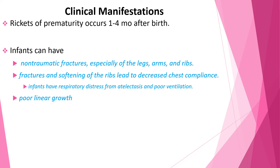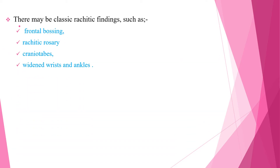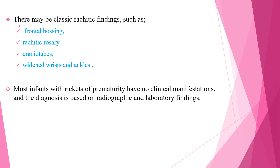This rachitic respiratory distress usually develops more than five weeks after birth, which distinguishes it from the early onset respiratory disease of premature infants. These infants have poor linear growth, with negative effects on growth persisting beyond one year of age. Additional long-term effects include enamel hypoplasia, and poor bone mineralization can contribute to dolichocephaly. Classic rachitic findings include frontal bossing, rachitic rosary, craniotabes, and widened wrists and ankles. Most infants with rickets of prematurity have no clinical manifestation, and the diagnosis is based on radiographic and laboratory findings.